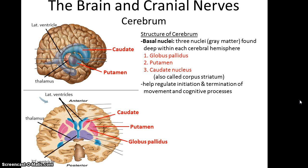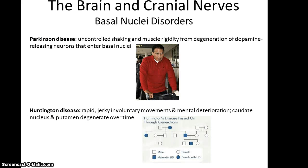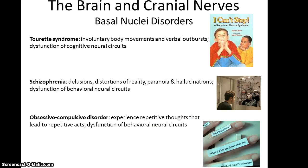If there is damage to the basal nuclei, you can have various disorders. For instance, Parkinson's disease is specifically the degeneration of dopamine-releasing neurons that enter the basal nuclei, and the consequence is uncontrolled shaking and muscle rigidity. There's Huntington's disease, where the patient will have rapid, jerky, involuntary movements and also some mental deterioration, caused by degeneration of the caudate nucleus and the putamen over time. There's Tourette's syndrome, which involves involuntary body movements and verbal outbursts — not necessarily profanity, but just inappropriate sounds.